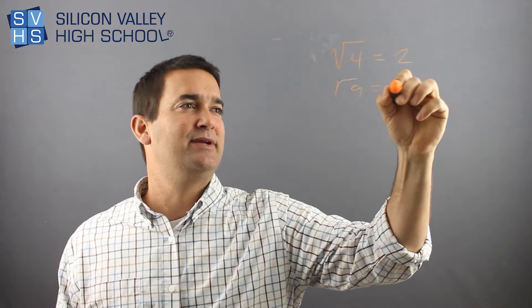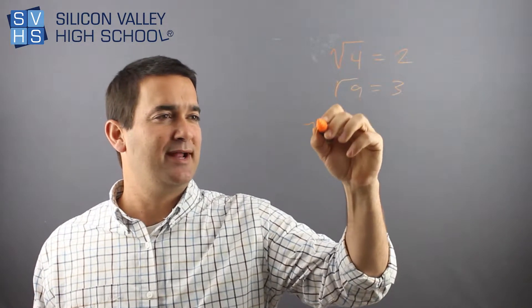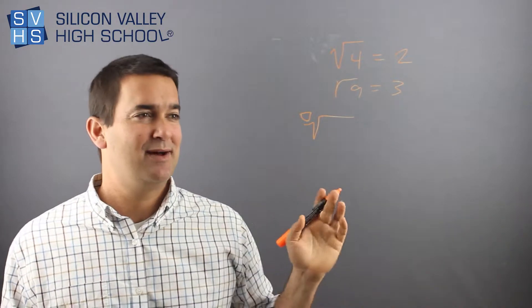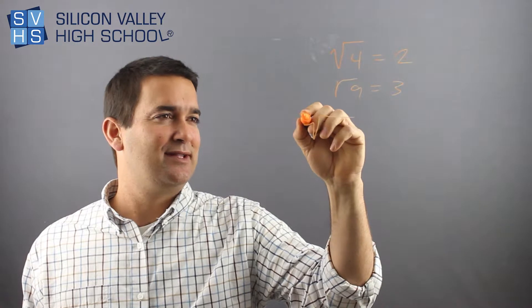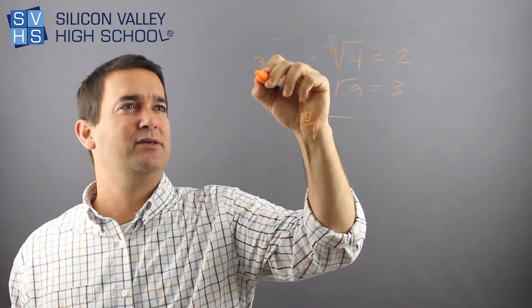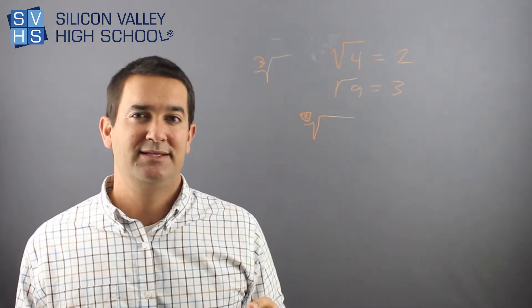But the real answer is that this little root sign has a number right here. And nobody writes it. It's so common in math that they just stopped writing it. And this is secretly a little 2. You do notice it when you have something like cube root. You totally notice that 3. But when there's no number, it is a 2.